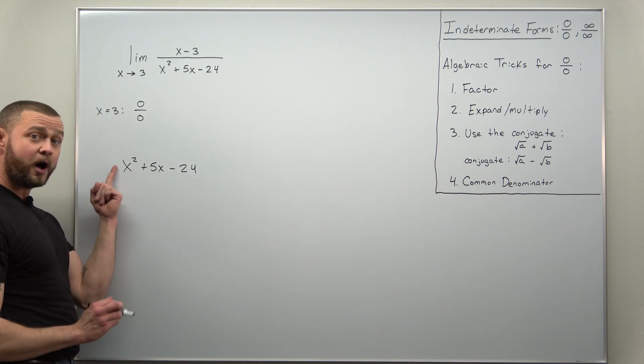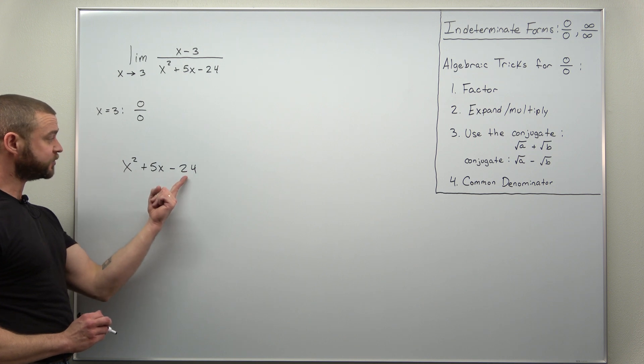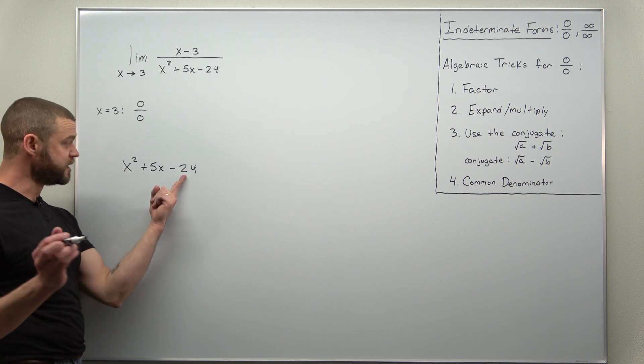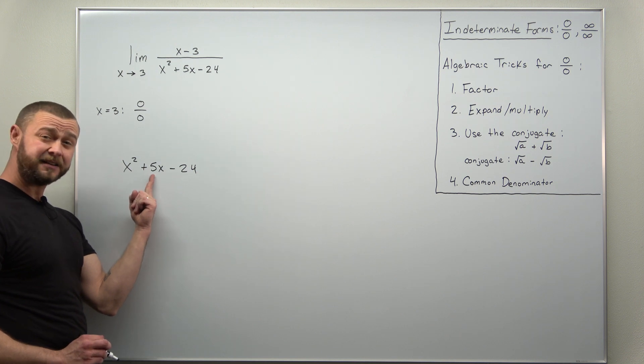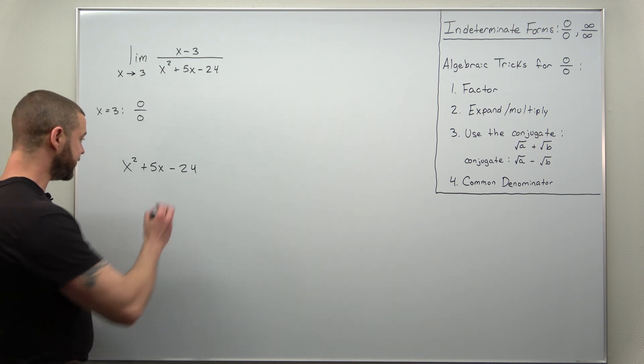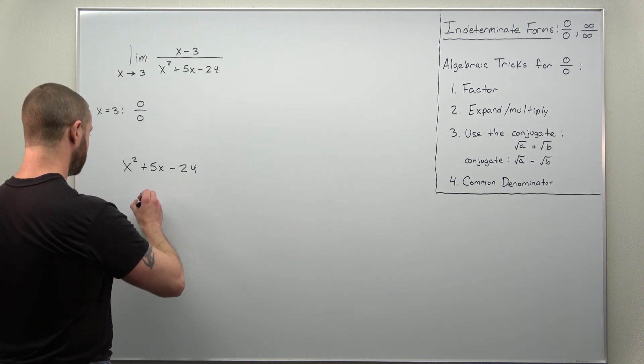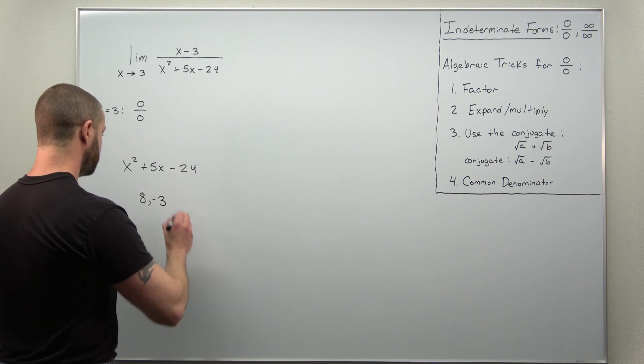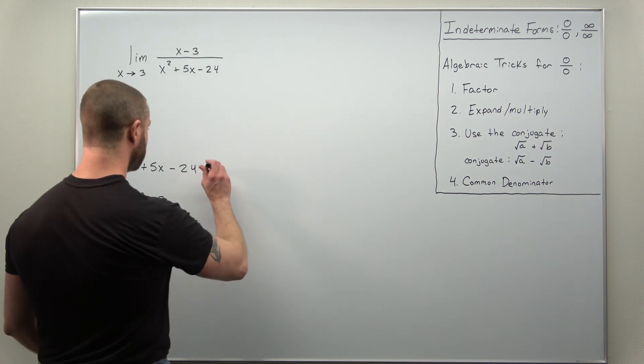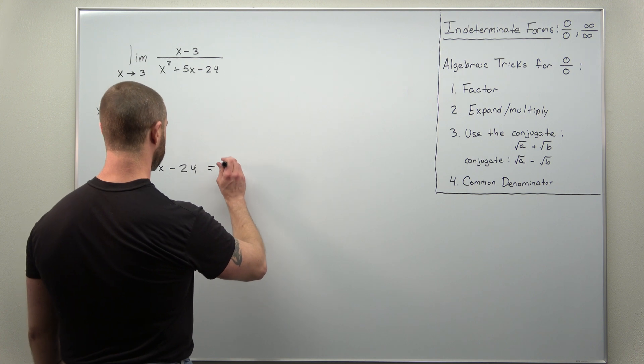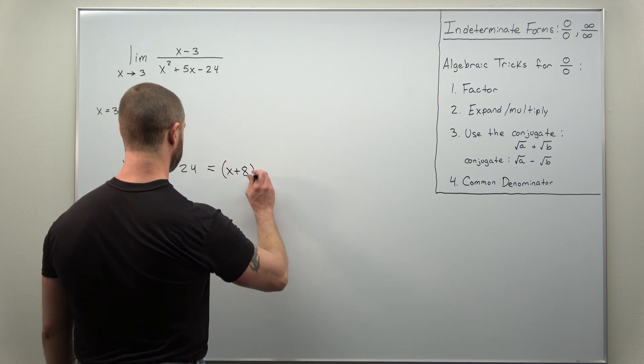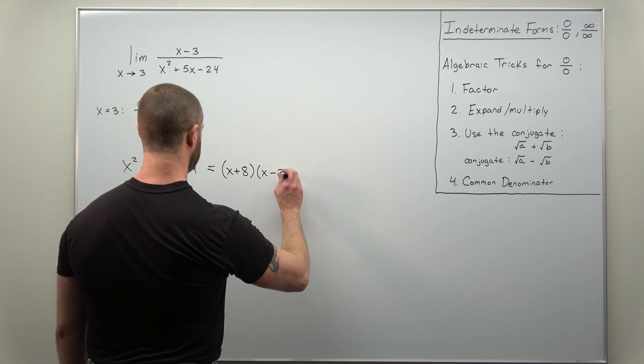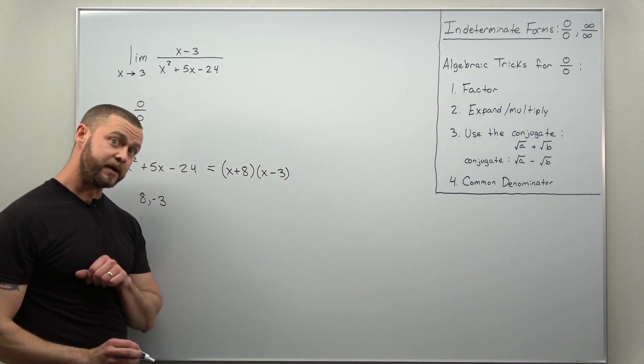All right here since we have a 1 in front of x squared we just look for two integers or numbers that multiply to negative twenty-four but add to positive five. And it looks like those numbers should be eight and negative three. So it looks like our factorization comes out to x plus eight times x minus three.